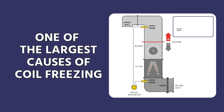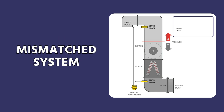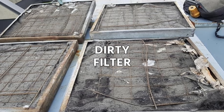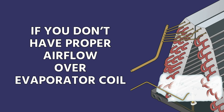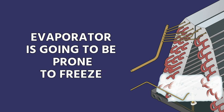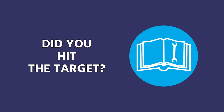Airflow is one of the largest causes of coil freezing, especially consistent coil freezing. Getting the airflow settings wrong, having a mismatched system, having ductwork that's too small, a dirty blower wheel, a dirty filter — those are the things you want to pay attention to first. If you don't have the proper airflow over your evaporator coil, that evaporator coil is going to run colder and is going to be prone to freeze. Always read the manual for the equipment you're working on, and you need to know what the proper airflow should be in order to know whether or not you hit that target.